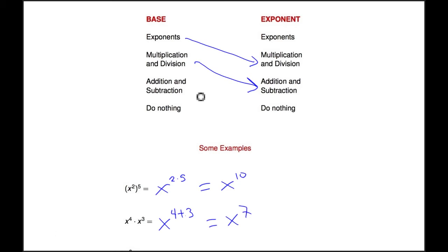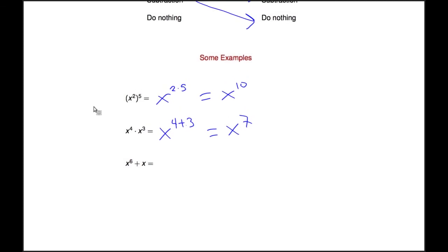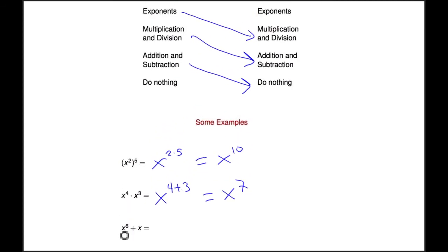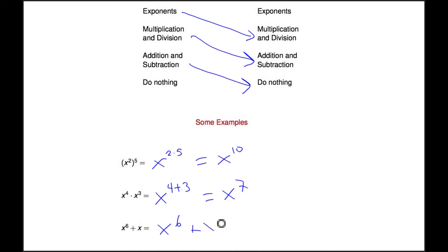And finally, if you're adding or subtracting with your base, then you don't do anything with the exponents. So here you've got x to the sixth plus x. The base is x in both cases; the exponent here is six, and the exponent in the other is just one. A common mistake is to say x to the sixth plus x to the first is x to the seventh, but that's not true. That's what it would be if you were multiplying. Since we're adding our base, we do nothing with the exponent — this can't be simplified any further. You just leave it as it is.